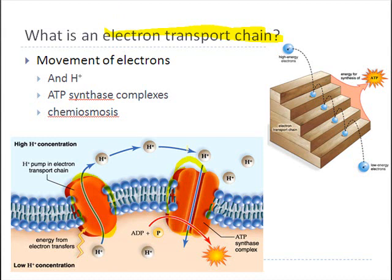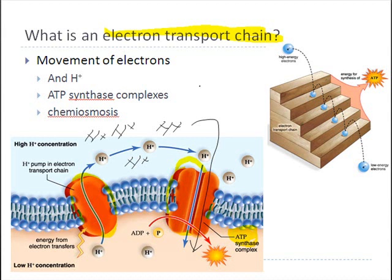We'll get into the specifics next class, but this involves the buildup of lots and lots of different hydrogen ions on one side of a membrane inside the mitochondrion, and then allowing those hydrogen ions to move down their concentration gradient through a transport protein called ATP synthase. As they move through that ATP synthase down their concentration gradient, we are literally converting the potential energy of all these stored hydrogen ions into energy used to attach a phosphate molecule to ADP.